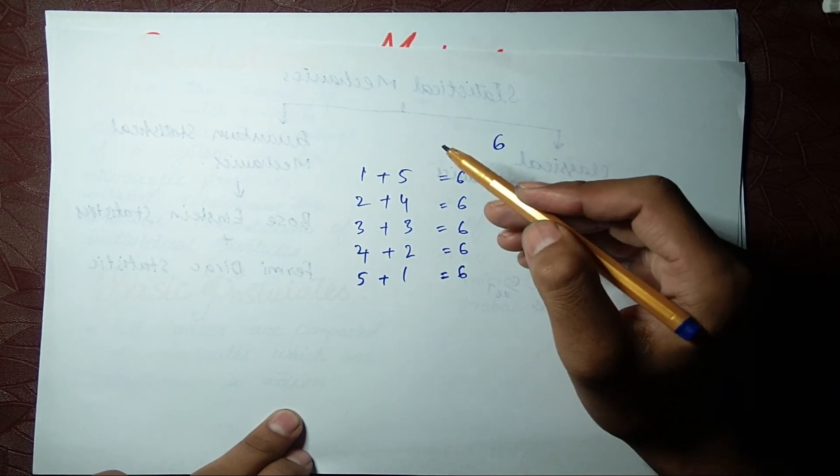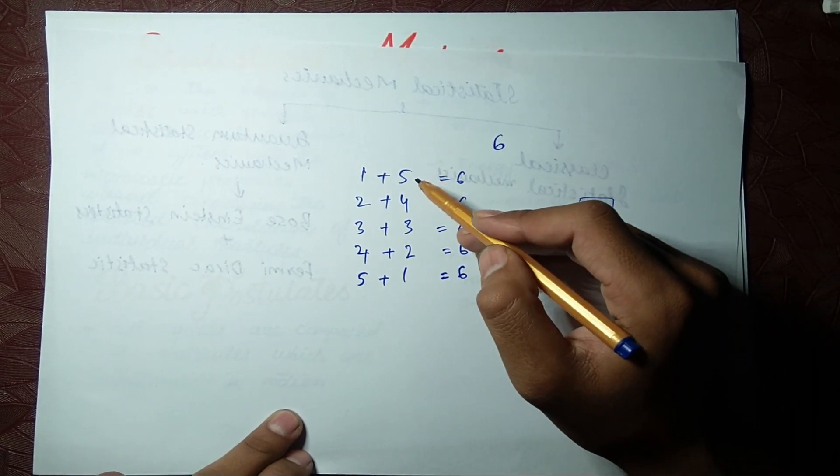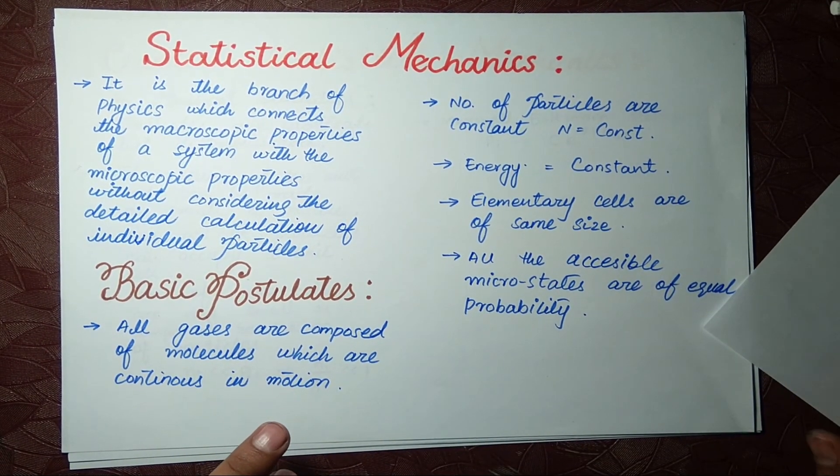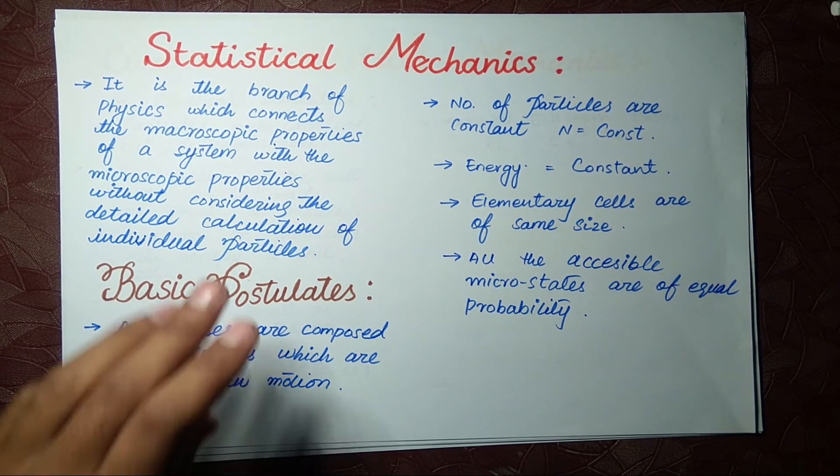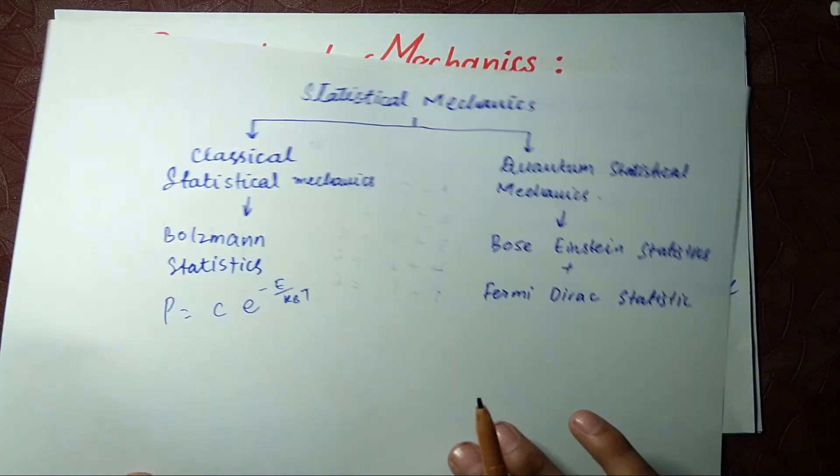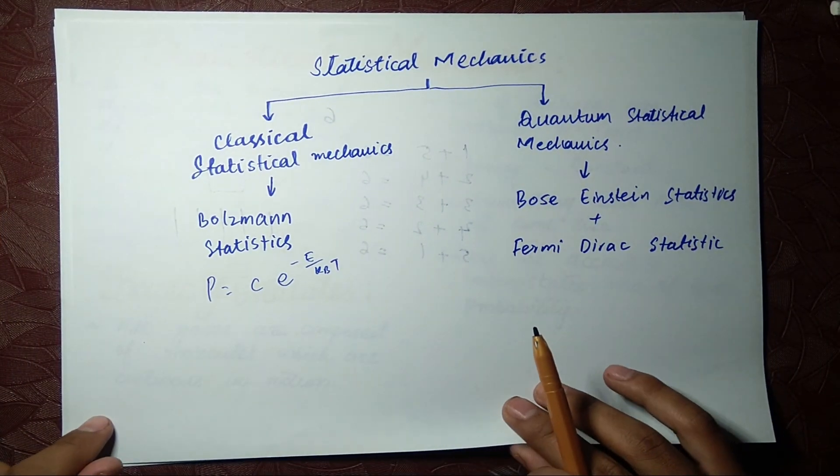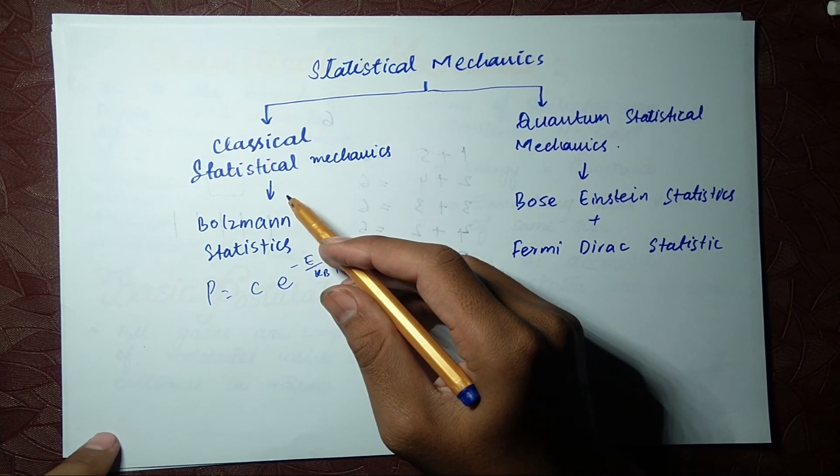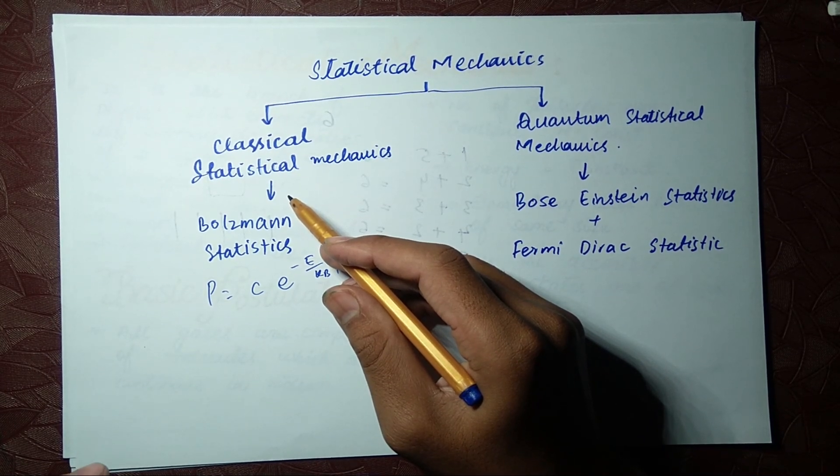So I think you understand what micro states are. So that's it. Now we've got what statistical mechanics is. Now we have to move toward classical statistical mechanics. What is classical statistical mechanics? We will see this in the next lecture.